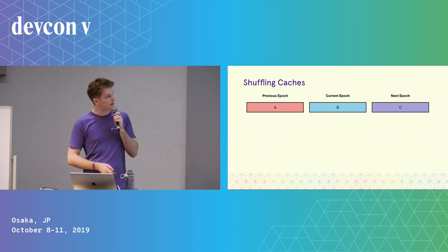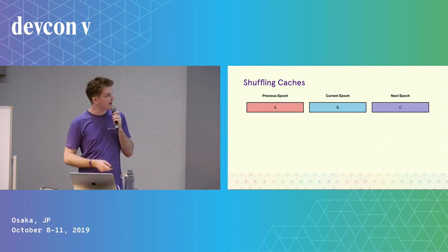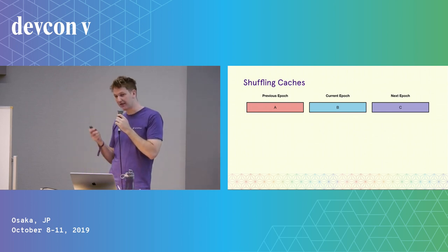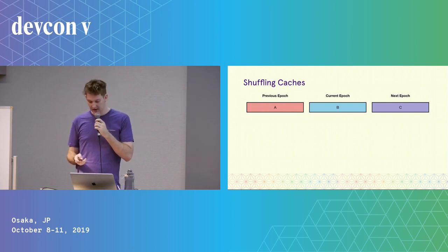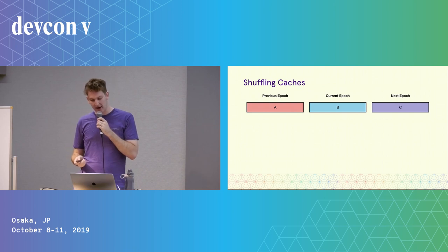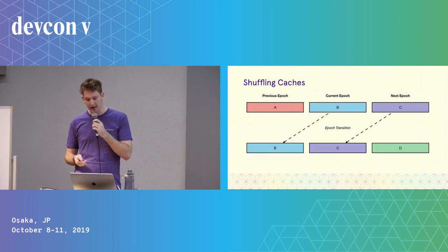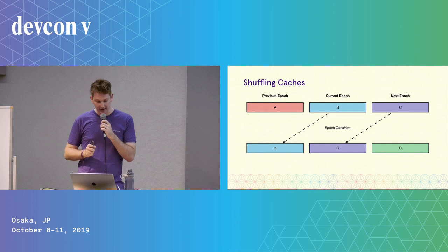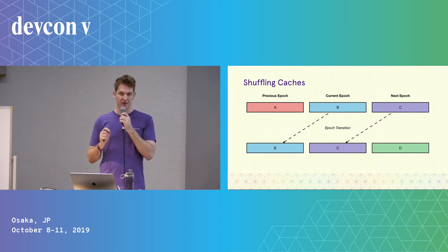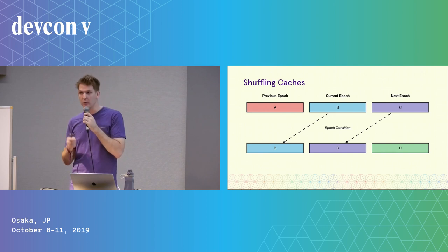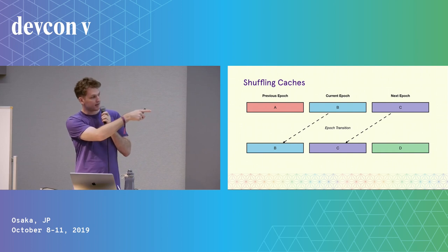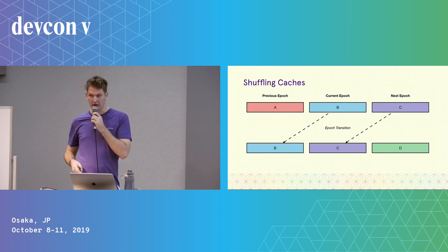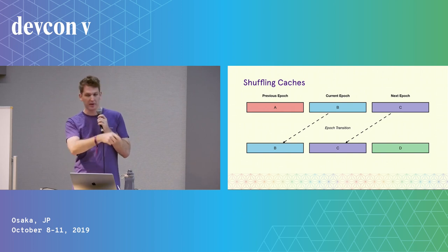In Lighthouse, what this looks like is we have three caches of shuffled validators: one for the previous epoch, the current epoch, and the next epoch. When we hit an epoch transition — moving from one epoch to the next — we update these caches by shifting them along by one, and then computing from scratch the shuffling for the next epoch. This works perfectly so long as you know the seed for the next epoch. By design in ETH2, we are meant to know the seed for the next epoch, so when we're transitioning into the current epoch we already know the RANDAO mix and the seed for the next epoch and are able to compute that shuffling.